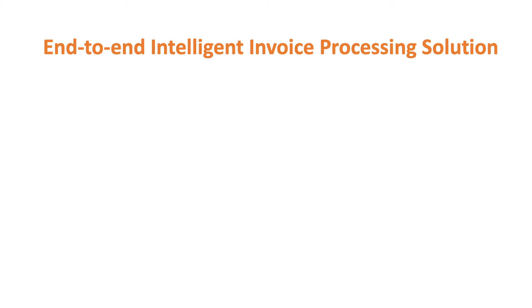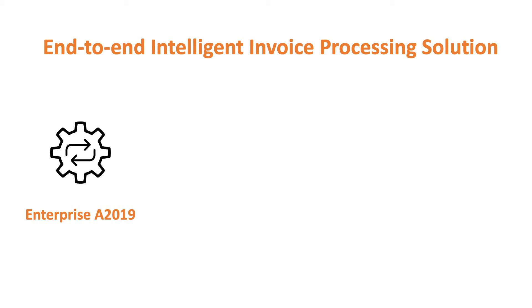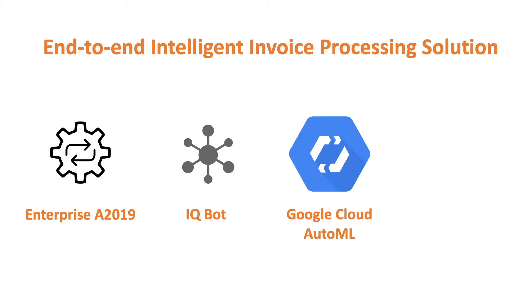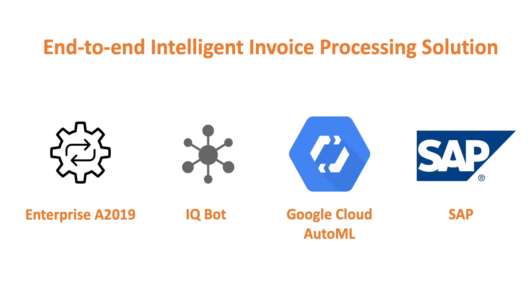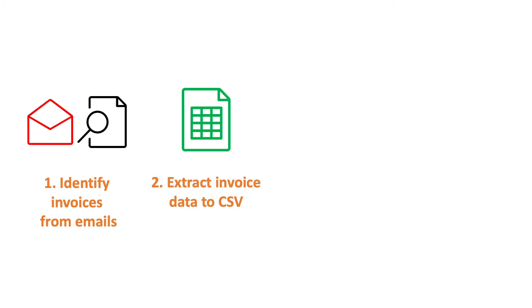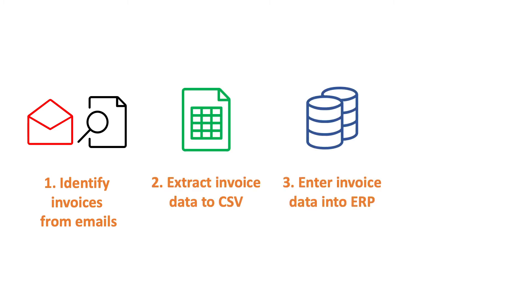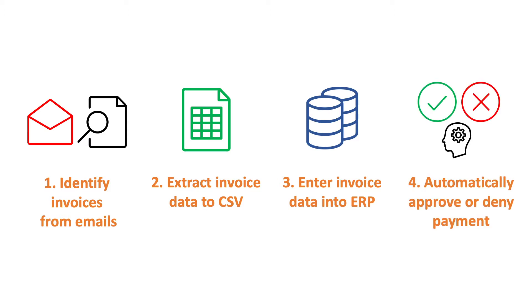In this demonstration, we will exhibit Automation Anywhere's vast range of AI-driven features, both in-house built and third-party integrated, as part of an end-to-end invoice processing solution involving Enterprise A2019, IQ Bot, Google Cloud AutoML, and SAP. This automation will allow us to sort through an email inbox, find and identify the invoices, extract the invoice data to CSV, enter the invoice data into an ERP system, and automatically approve or deny the invoice payment given certain criteria. Let's go ahead and see the bot in action and the features that make it possible.